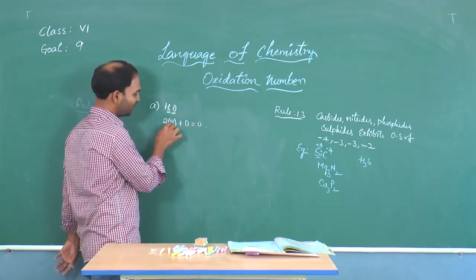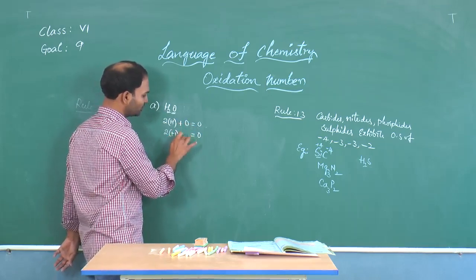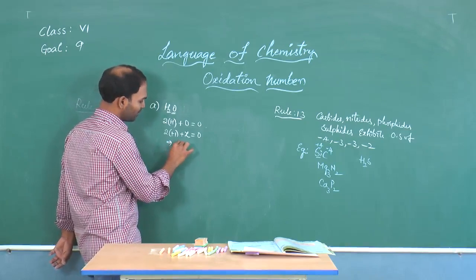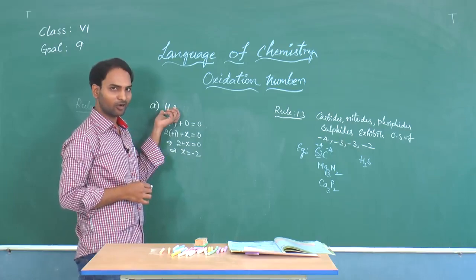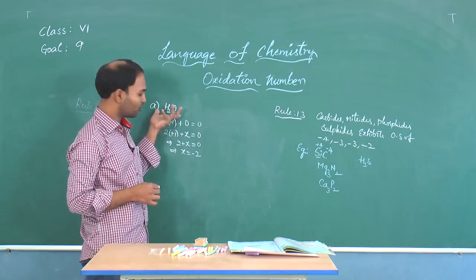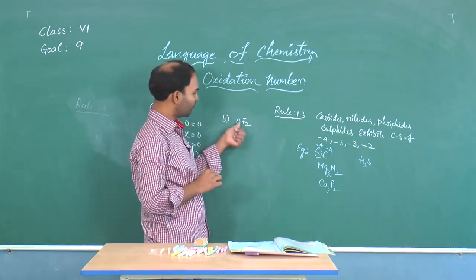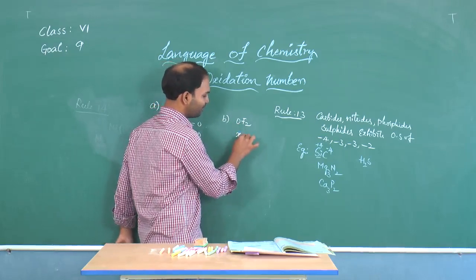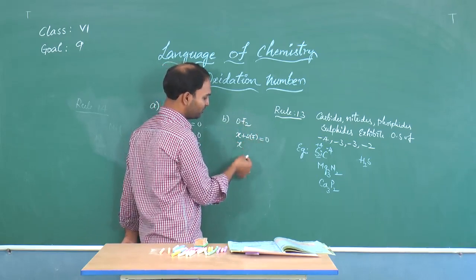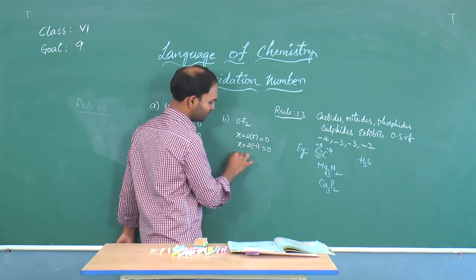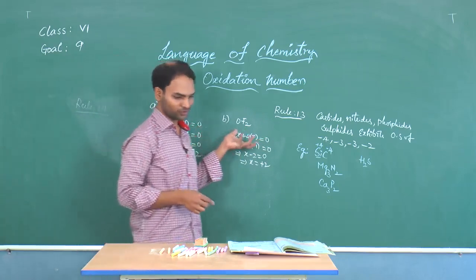For OF₂: let oxygen's oxidation state be x. Then x + 2(F) = 0. Fluorine's valency is minus 1, so x + 2(−1) = 0, giving x minus 2 = 0, therefore x = +2. Oxygen exhibits a positive oxidation state of +2 in OF₂. The answer is option B, oxy fluoride.